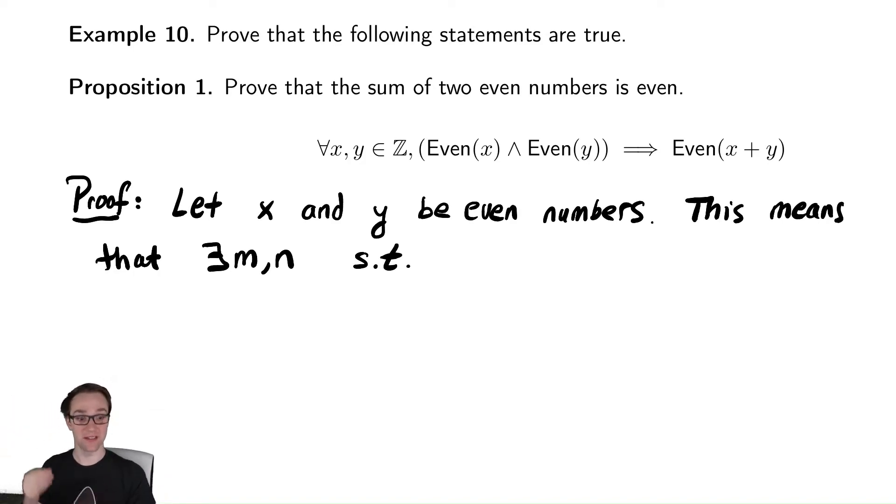If a number is even, it's a multiple of two. So I can write x as 2 times m and y as 2 times n. That is the direct implication of the fact that they were even.